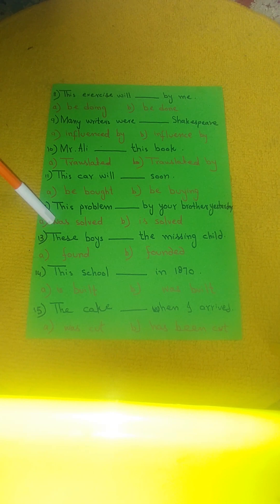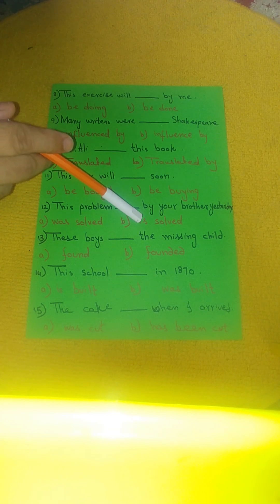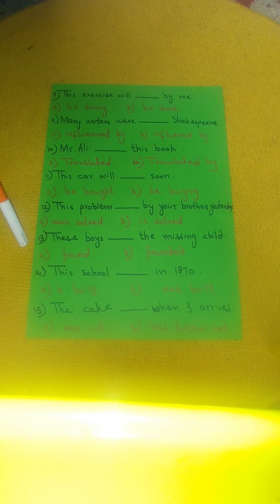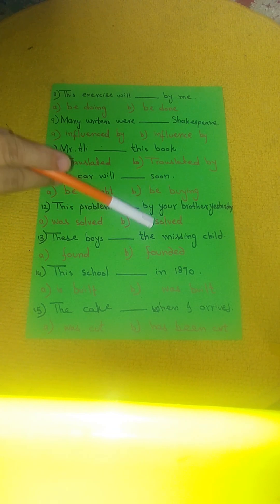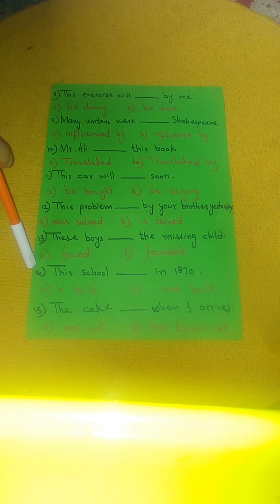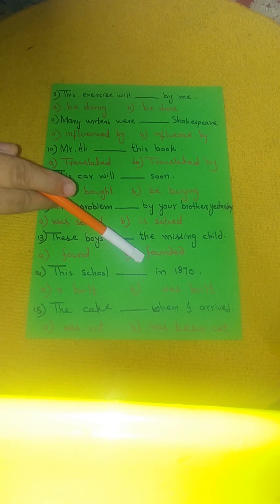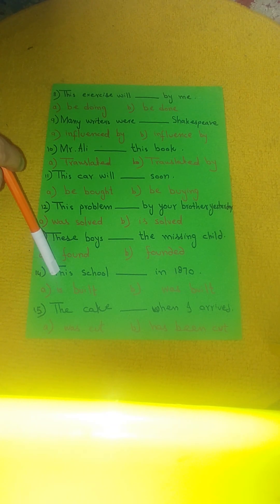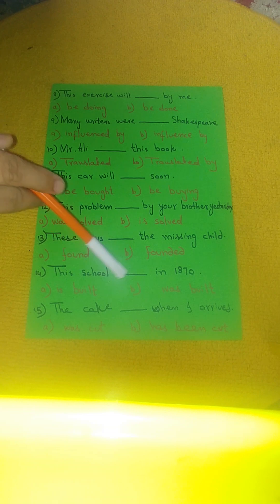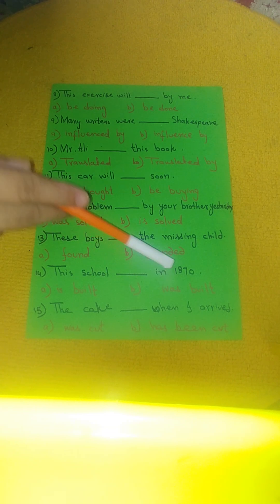Number 13: These boys ___ by your brother. Option A: found. Option B: found it. Number 14: This school ___ in 1870. Option A: is built. Option B: was built.